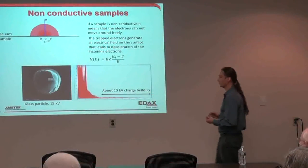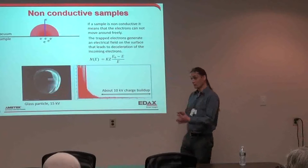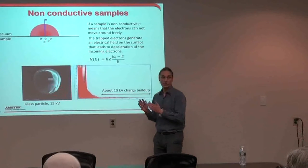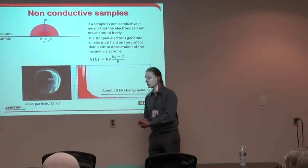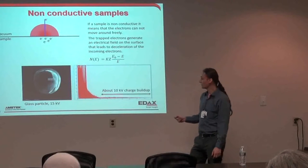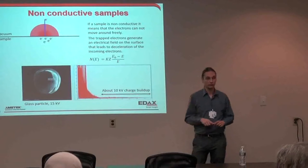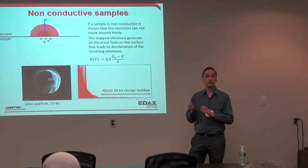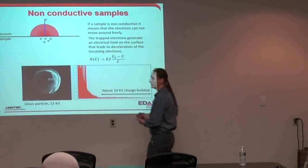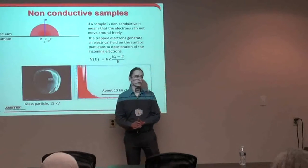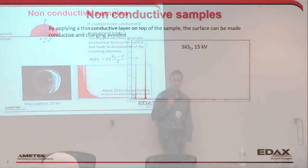This gives us multiple problems. One is the imaging — the beam may move so we might not be putting the spot where we think it is. The other problem is that instead of having 15 kV hitting the sample, we only have something like 5 kV, which severely limits the transitions we can excite. We can't see all the elements in our sample because we're only hitting it with 5 kV.